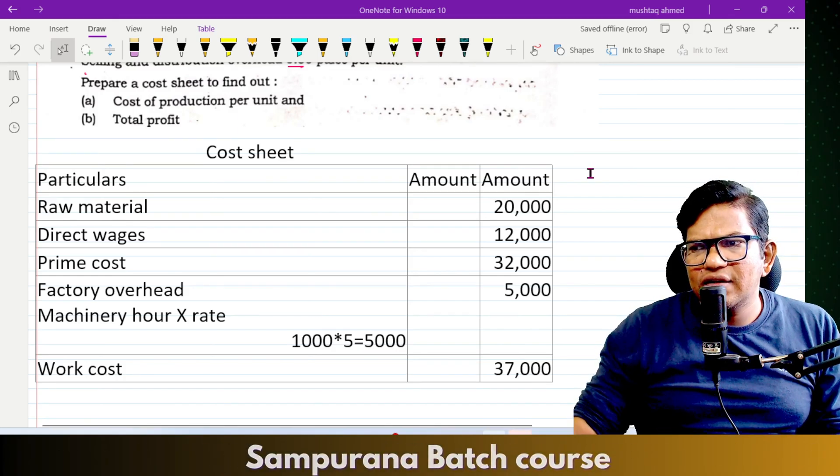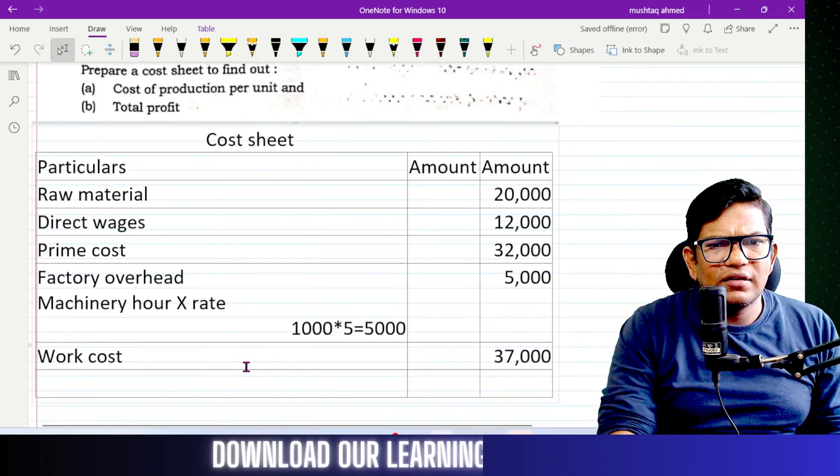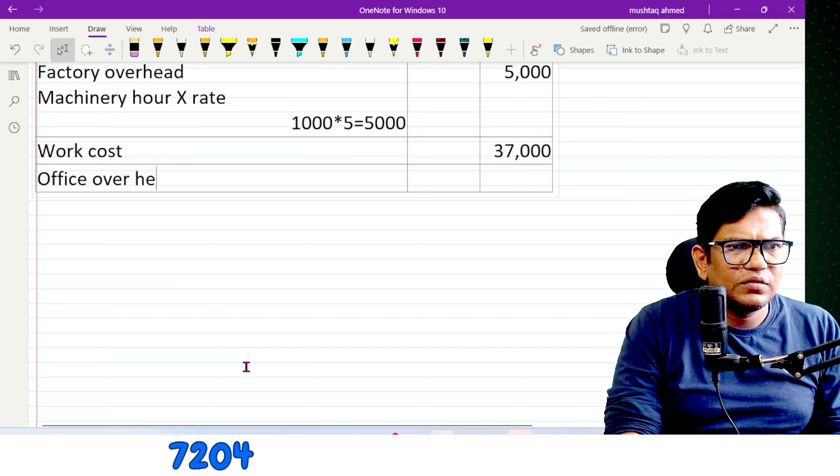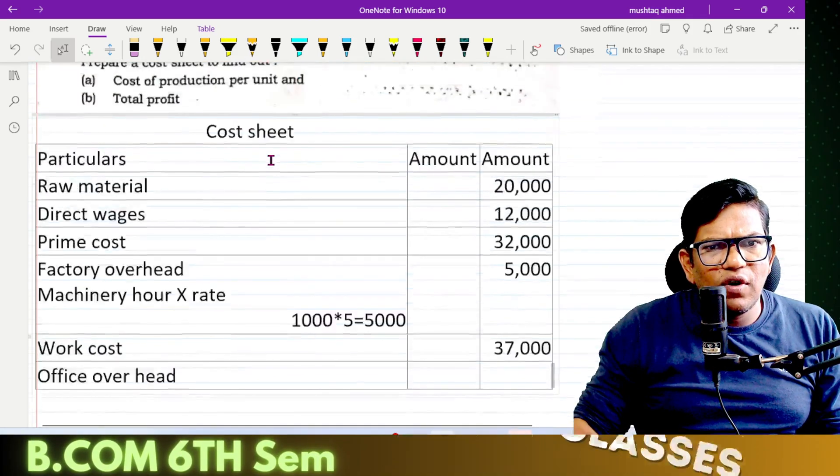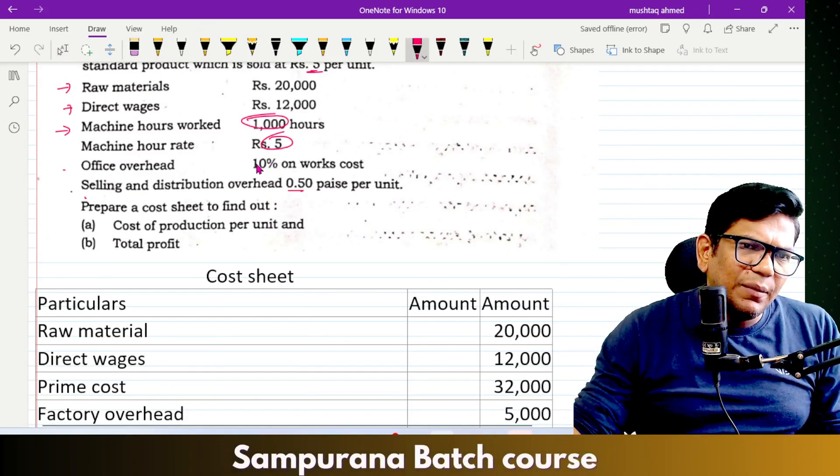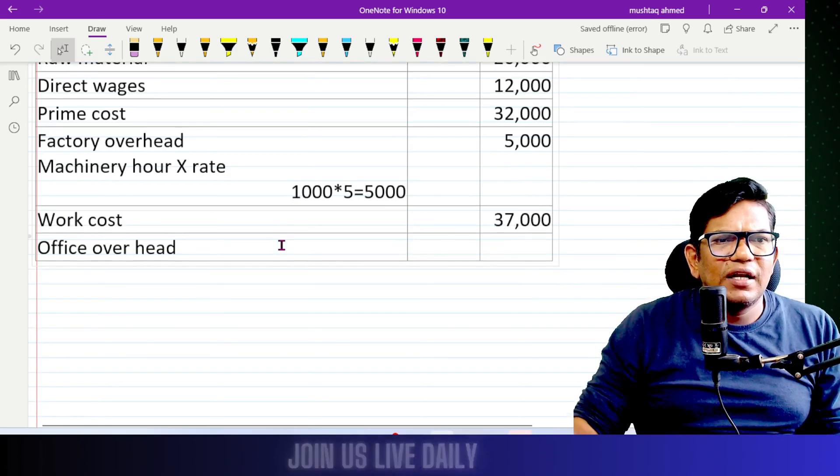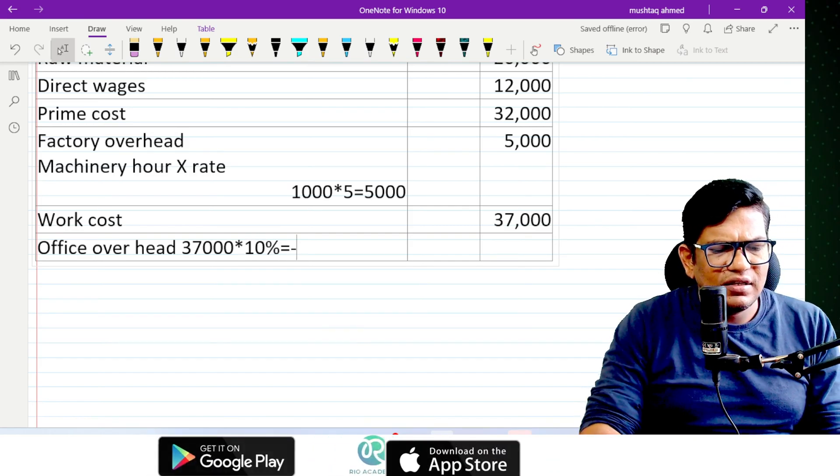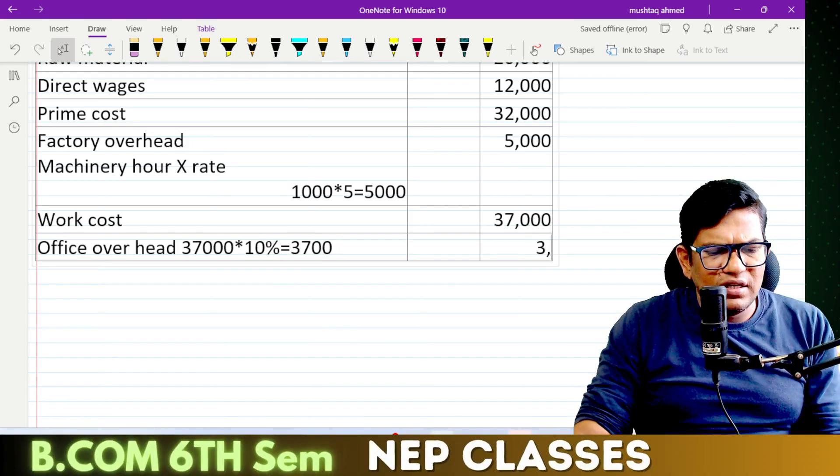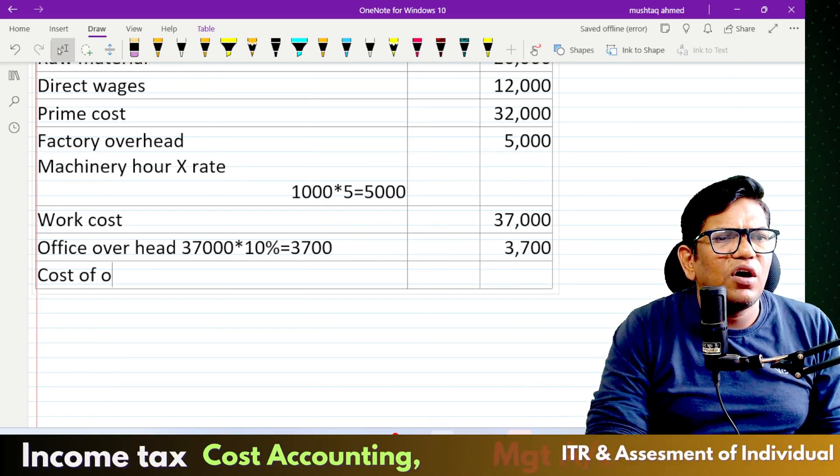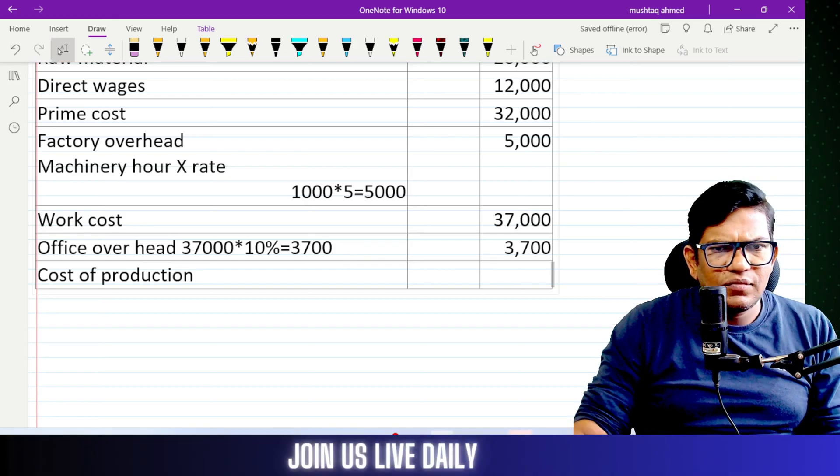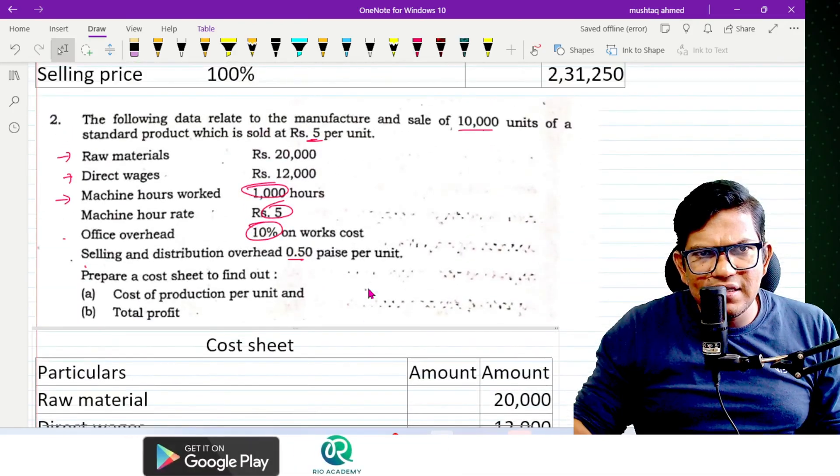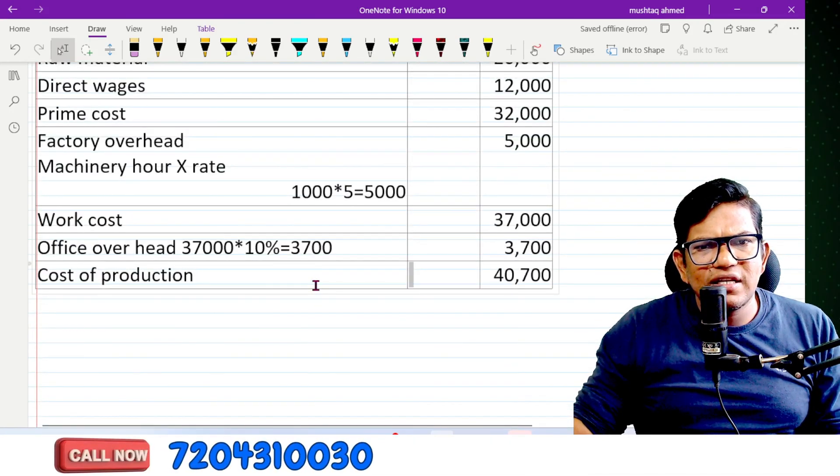I will send all notes. Next is office overhead. Office overhead is 10% on work cost. 37,000 times 10% equals 3,700. Cost of production is 40,700.